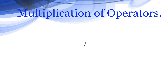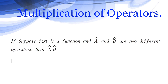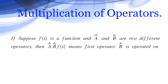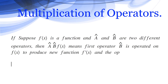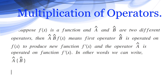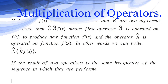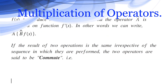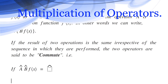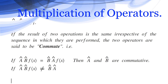Multiplication of operators: suppose f(x) is a function and Â and B̂ are two different operators. ÂB̂f(x) means first B̂ is operated on f(x) to produce a new function f'(x), and then Â is operated on f'(x). If the result of two operations is the same irrespective of the sequence in which they are performed, the two operators are said to commute. That is, if ÂB̂f(x) = B̂Âf(x), then Â and B̂ are commutative. If ÂB̂f(x) ≠ B̂Âf(x), then Â and B̂ are non-commutative.